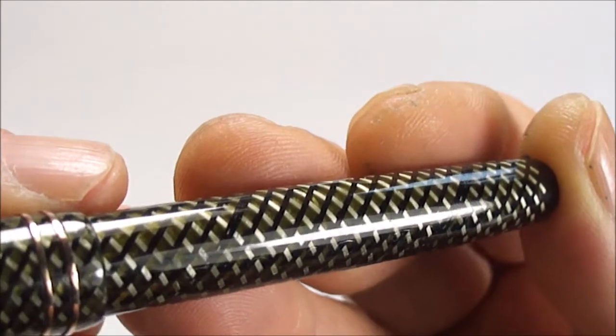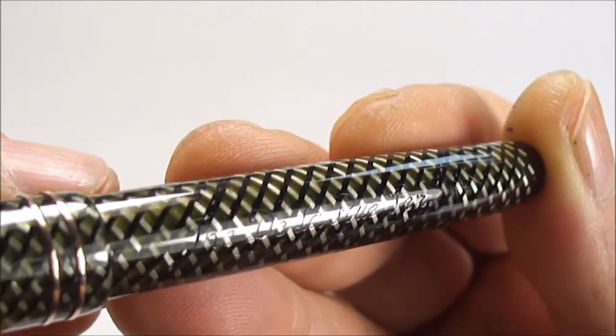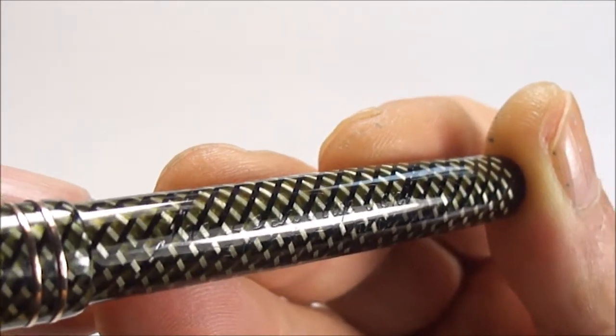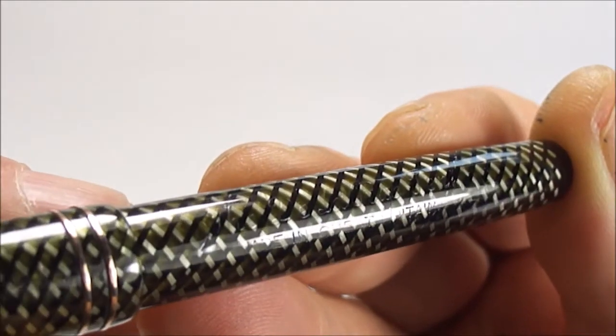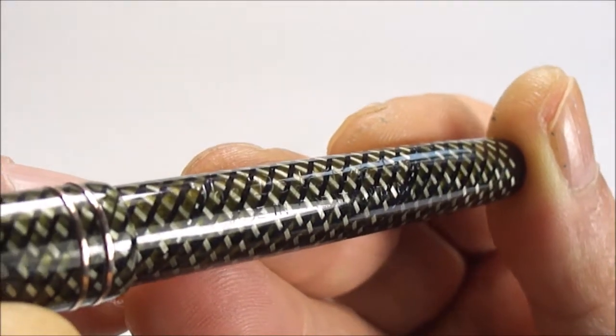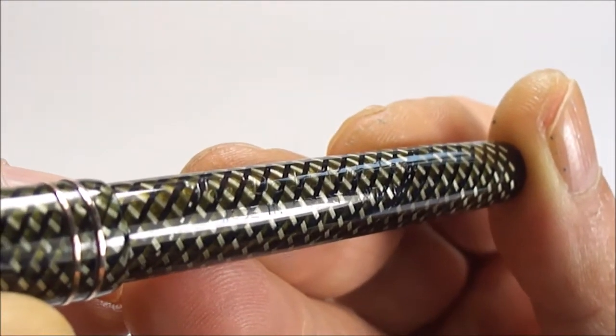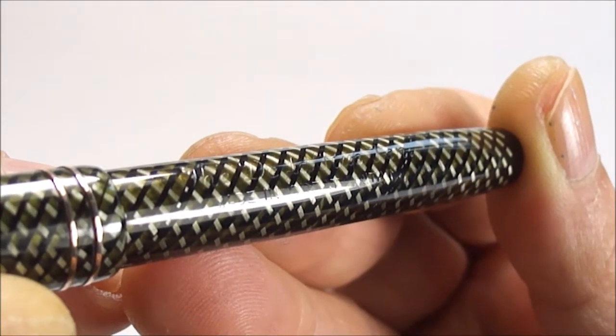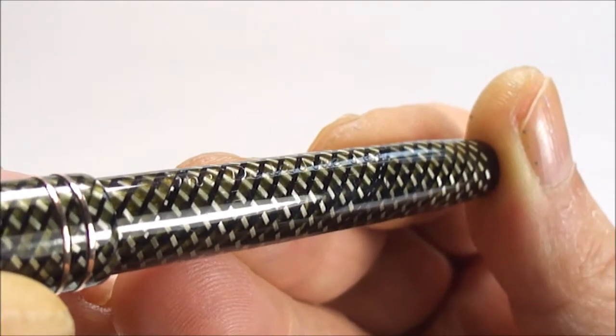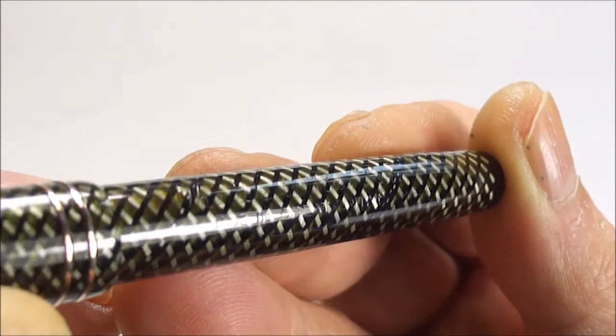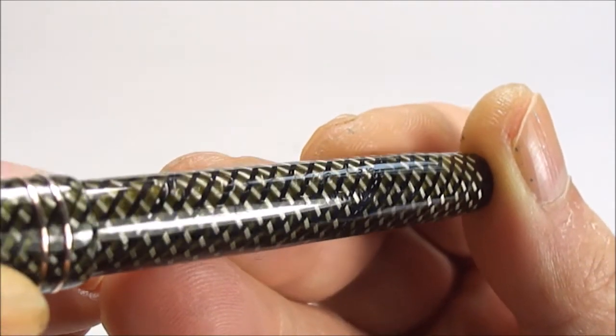Right, well what I'm going to do, I'm going to simply twirl it and hopefully the camera picks it up better than my eyes. But if you can, it should be able to, well you should be able to see it says the De La Rue pen and then underneath, made in Great Britain.